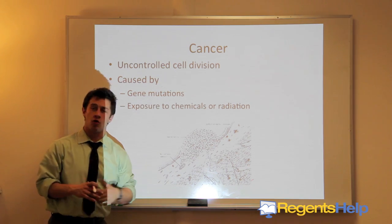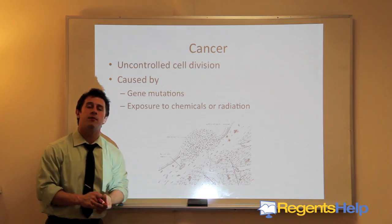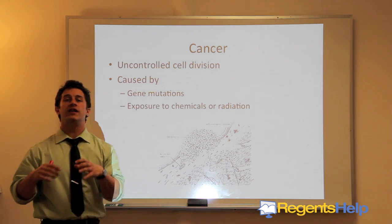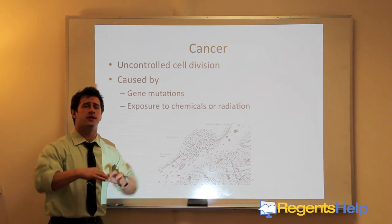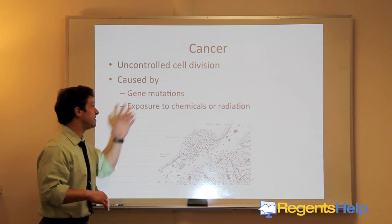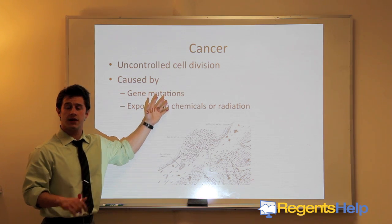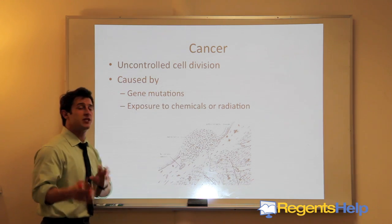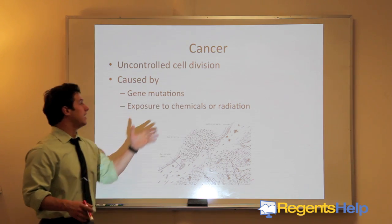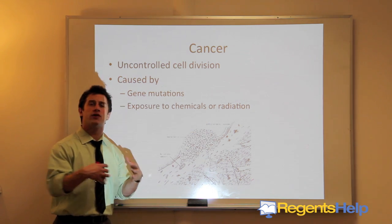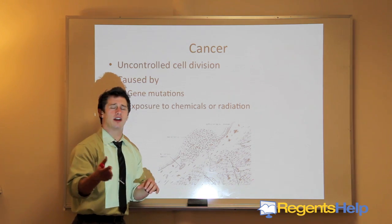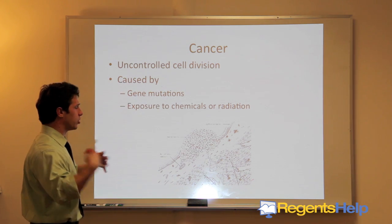Cancer is uncontrolled cell division. There is a problem in the genetic code of those cells, and for some reason the cell cycle — that cell division — cannot be shut off. It's caused by two things: either genetic mutations, where you might be born with a predisposition to cancer, or exposure to chemicals or radiation. These mutagenic agents cause mutations and essentially switch on an uncontrolled portion of cell division.